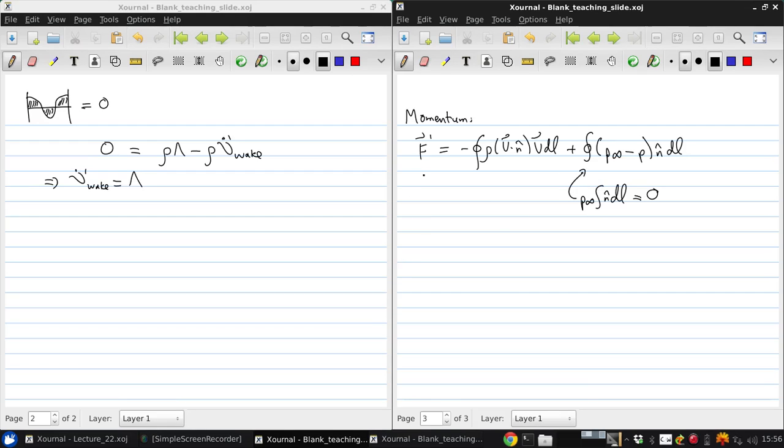So we're going to focus on the X direction equation here since we're interested in developing an expression for drag. But the Z direction result would yield L prime equals rho infinity gamma, which is just the Kutta-Joukowsky theorem.